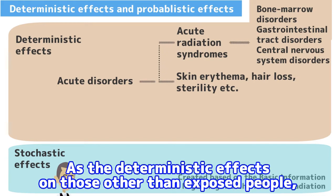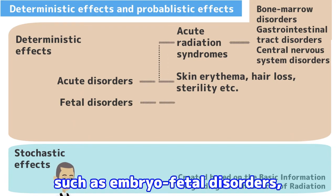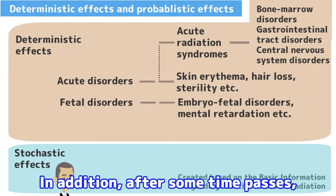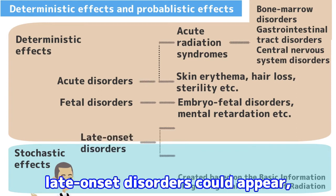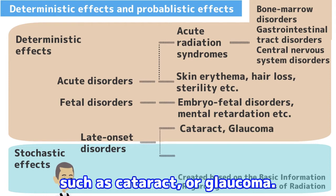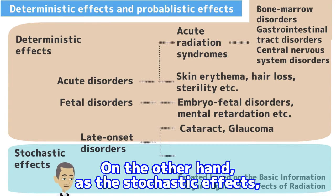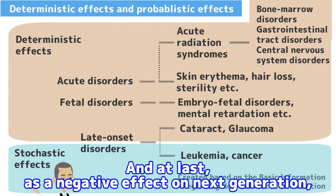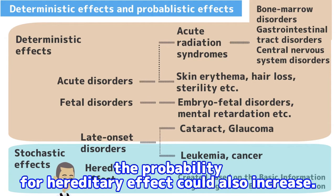As the deterministic effects on those other than the exposed people, fetal disorders could appear, such as embryo fetal disorders or mental retardation. In addition, after some time passes, late onset disorders could appear, such as cataract or glaucoma. On the other hand, as the stochastic effects, it is possible for the probability of leukemia or cancer to increase. And as a negative effect on the next generation, the probability for hereditary effects could also increase.